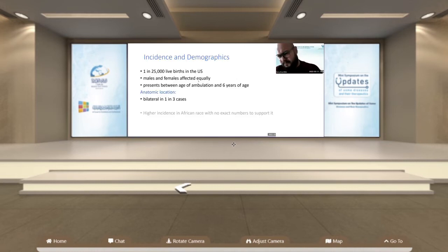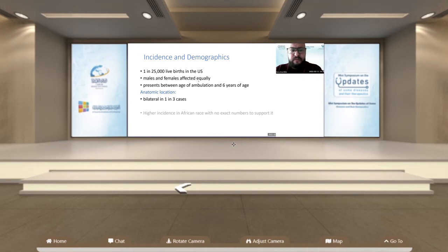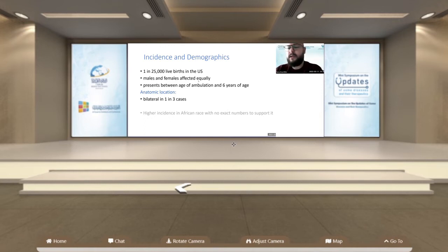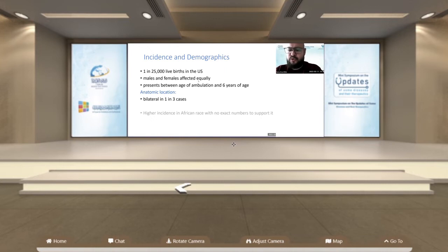This leads to abnormal mechanical compression of the physeal plate, leading in some cases to progressive deformity and in some cases to slipping of the capital epiphysis. The incidence is approximately one per 25,000 live births in the U.S., with no difference between males and females. It is always present between the age of ambulation and six years, as it is related to weight bearing. Laterality: it is bilateral in a third of cases, with a slightly higher incidence in African races.